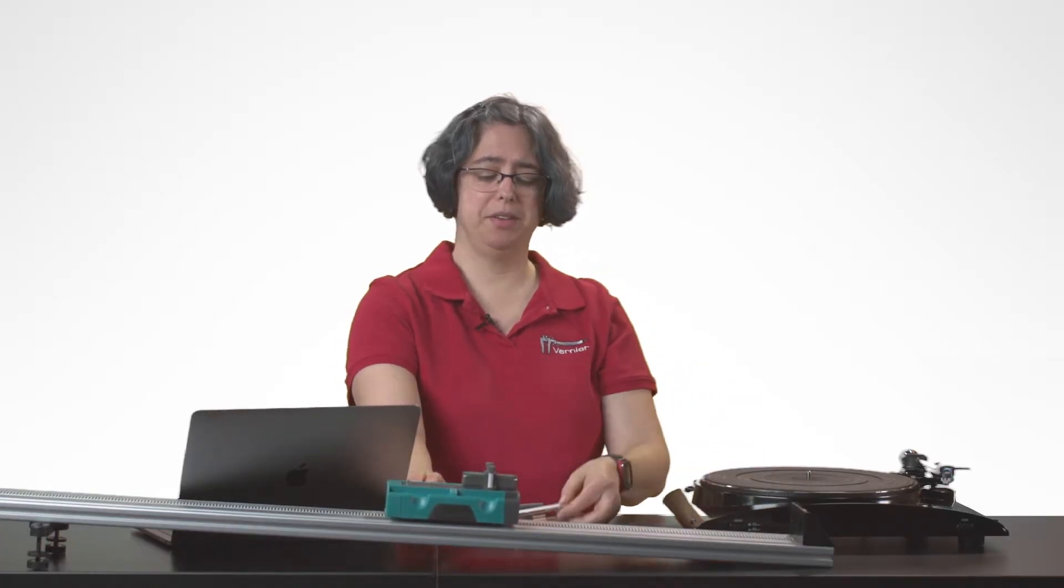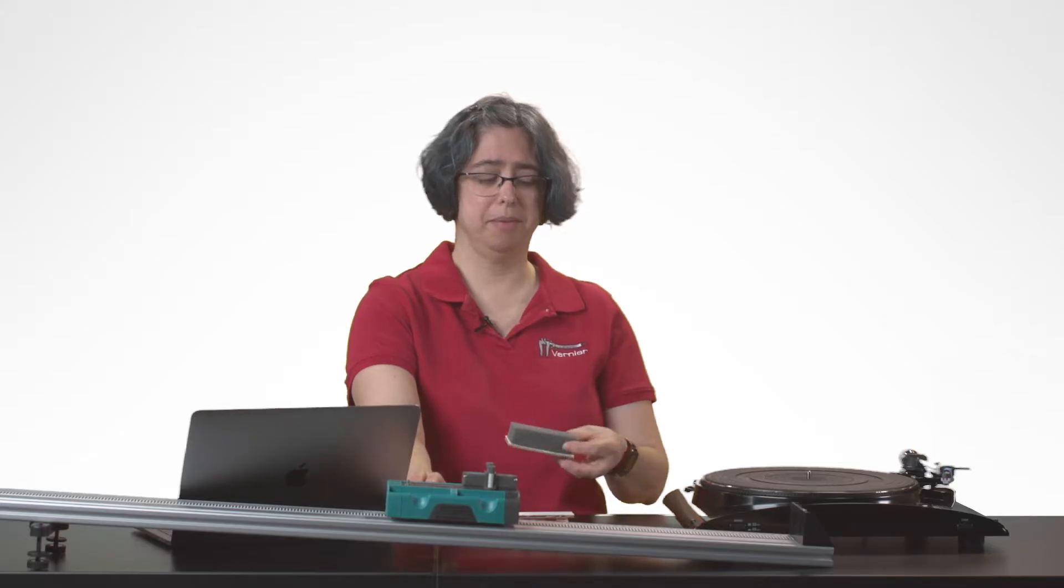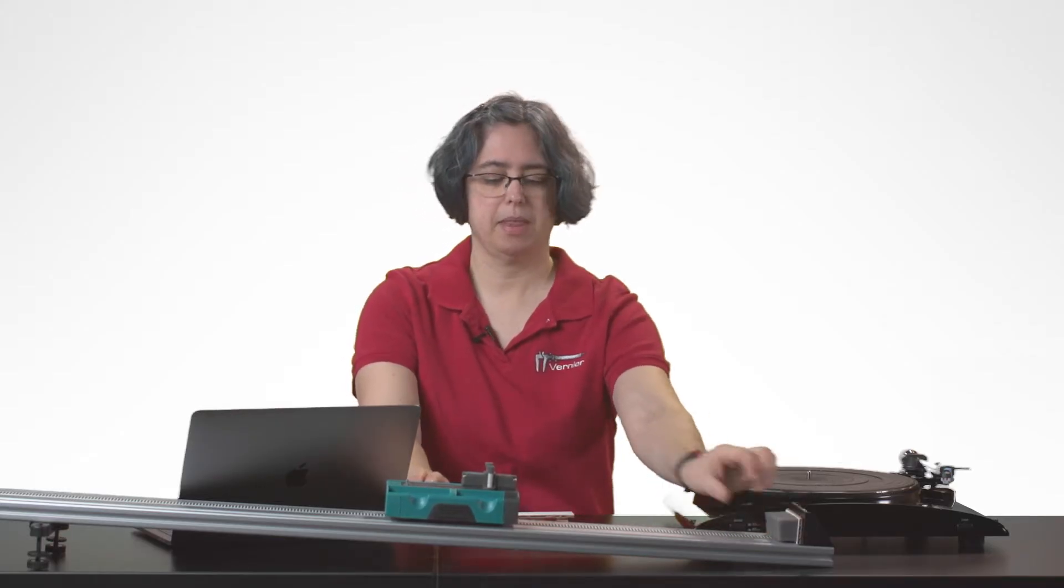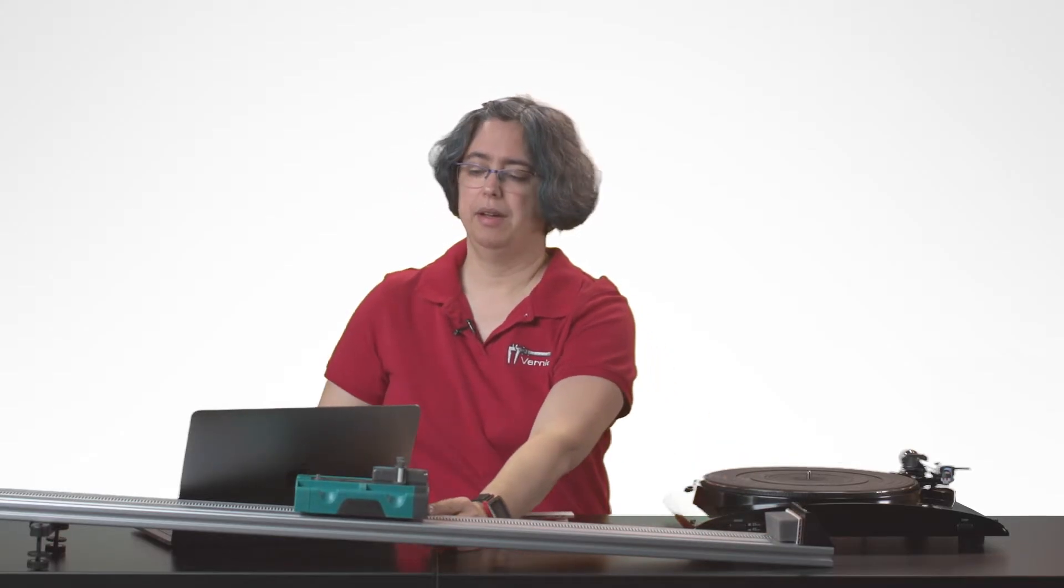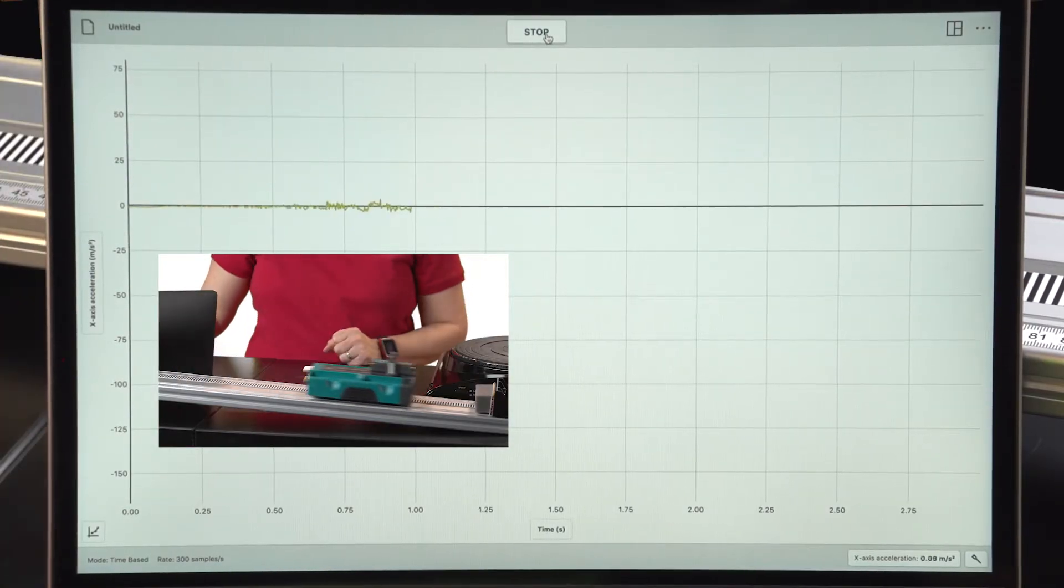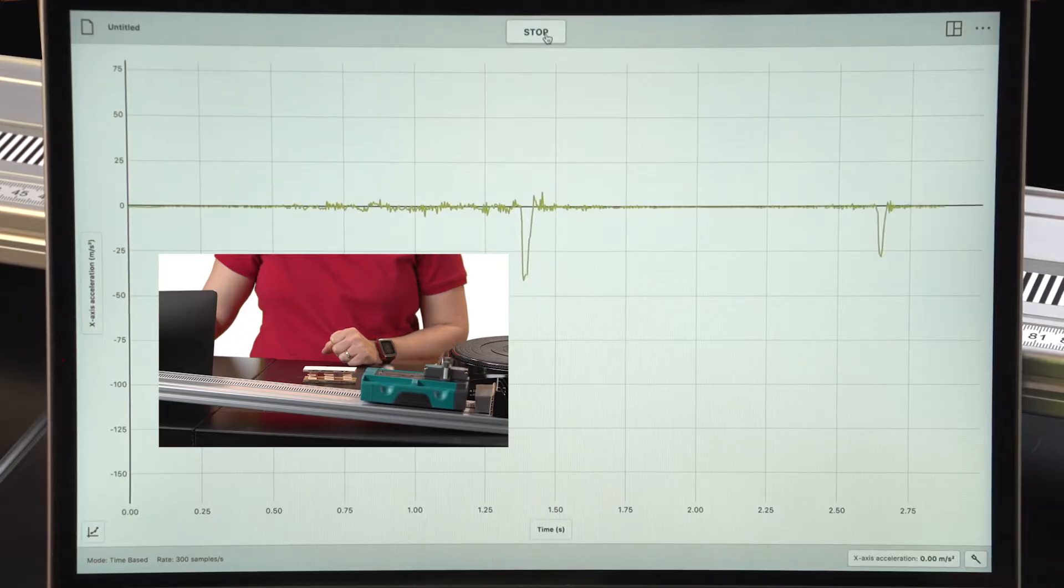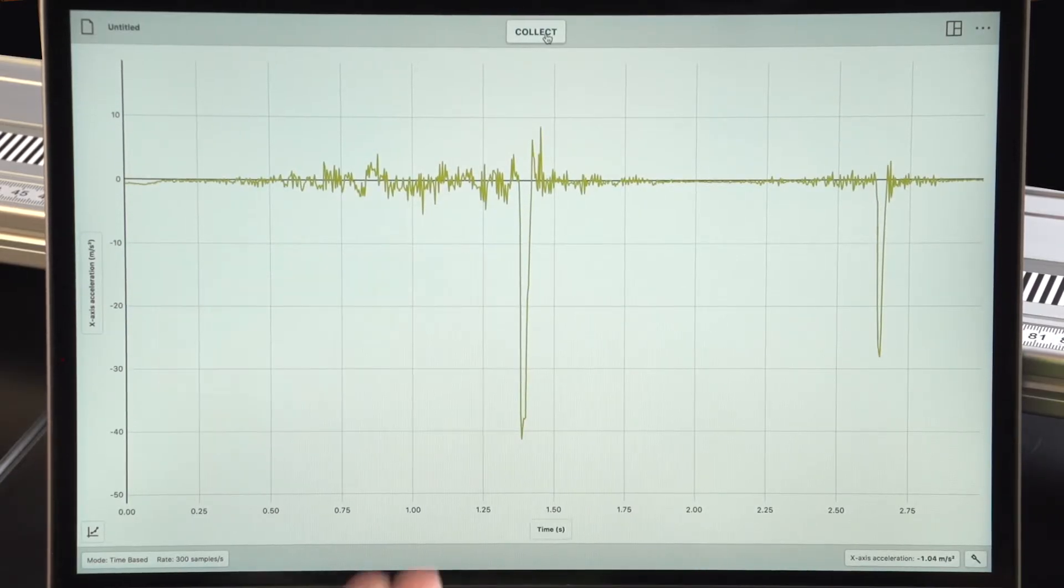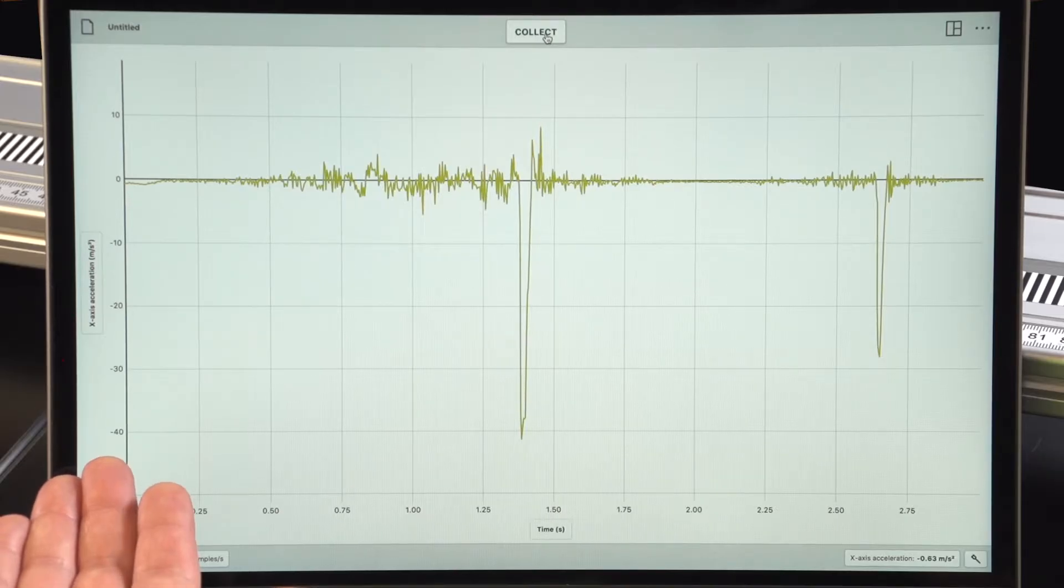I'm going to switch barriers from this one to this one. Now, when I collect data, I should see a different result. So as you can see, this collision is not going to have as large an acceleration.